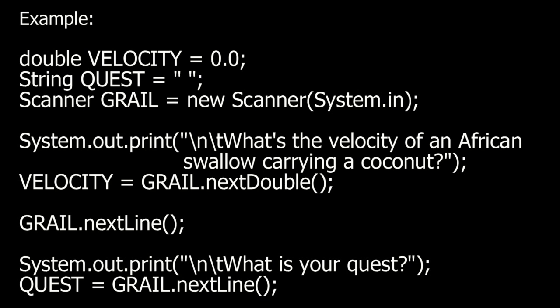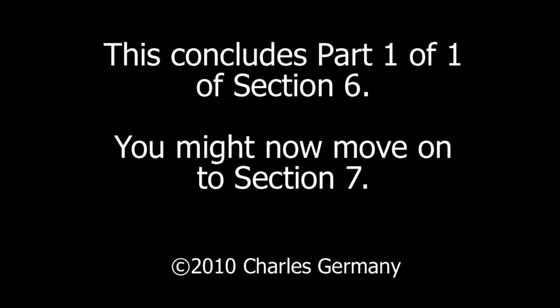The fix? We can call NextLine on the scanner object right after we call NextDouble. Then we'll simply call NextLine again. This will consume the extra character left on the buffer and allow the user to enter their response for the second question.